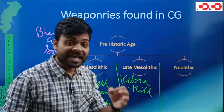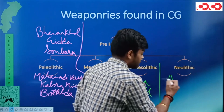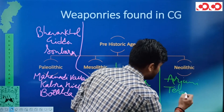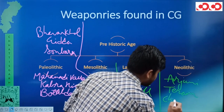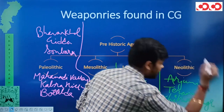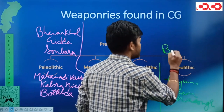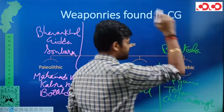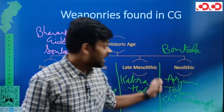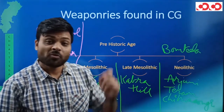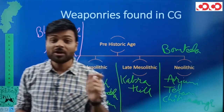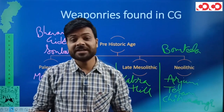Finally, Neolithic age — weaponries found at: Arjuni, Teram (Rajpur district), Chitwa Dongri (Balod district), and Bom Tila (Rajpur Gaon district). So, Neolithic weaponries: Arjuni, Teram, Chitwa Dongri, and Bom Tila. तो यह basically Chhattisgarh की weaponries — Paleolithic age, Mesolithic age, Late Mesolithic, और Neolithic age।